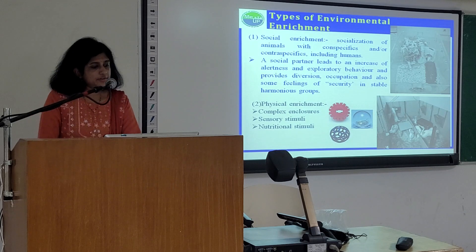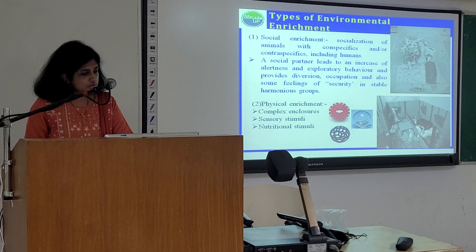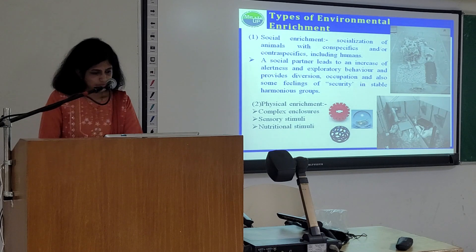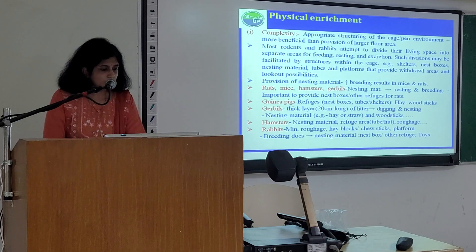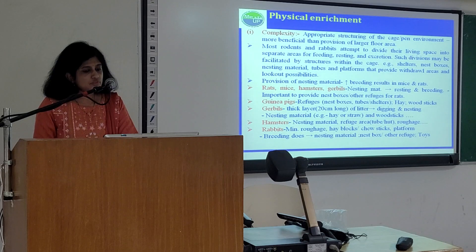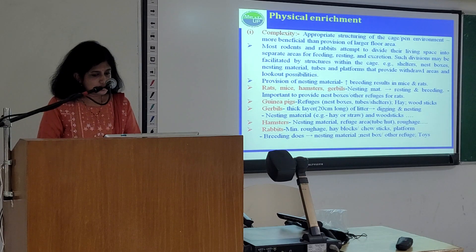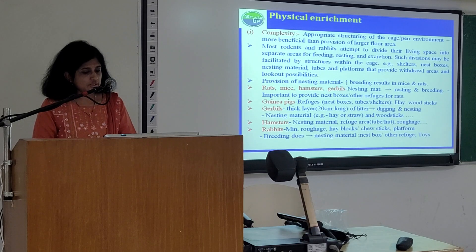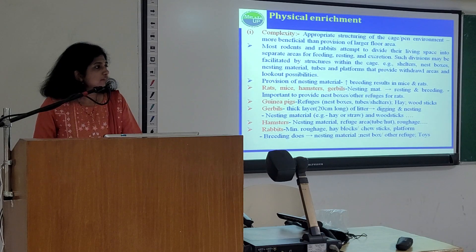There are mainly two types of environmental enrichment: social enrichment and physical enrichment. Social enrichment means socialization of animals with conspecifics and/or interspecifics including humans. A social partner leads to increased alertness and exploratory behavior and provides diversion, occupation and feelings of security in stable harmonious groups. Physical enrichment is divided into three types: complexity, sensory stimuli, and nutritional stimuli. Complexity means appropriate structuring of the cage environment, which is more beneficial than provision of larger floor area. Most rodents and rabbits attempt to divide their living space into separate areas for feeding, resting and excretion, facilitated by structures such as shelters, nest boxes, nesting materials, tubes and platforms that provide withdrawal areas and lookout possibilities.